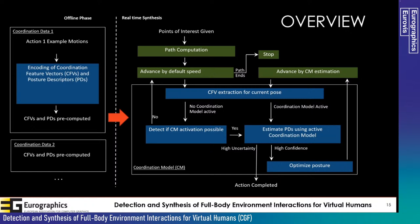Here is an overview of our method. It begins with an offline phase in which sample data gets coordination feature vectors and posture descriptions pre-computed. In real-time synthesis: the system receives points of interest for path computation, the character walks at default speed, and each frame its coordination feature vector is extracted to test whether to activate the model. If the model activates, it runs the coordination function to get posture descriptions and runs the optimized posture. The speed gets controlled by the model, and a loop runs until the confidence no longer meets the threshold, completing the action.